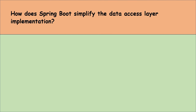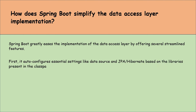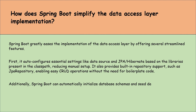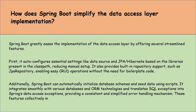How does Spring Boot simplify the data access layer implementation? Spring Boot makes the implementation of data access layer easy by offering several streamlined features. It auto-configures essential settings like data source and JPA based on the libraries present in the classpath, reducing manual setup. It also provides built-in repository support such as JPA repository, enabling easy CRUD operations without boilerplate code. Additionally, Spring Boot can automatically initialize database schemas and seed data using scripts. It also integrates smoothly with various databases and ORM technologies, translating SQL exceptions into Spring's data access exceptions and providing a consistent, simplified error handling mechanism.